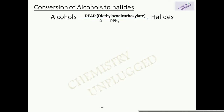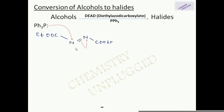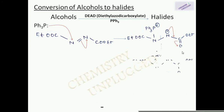Triphenylphosphines are also used for conversion of alcohols to halides. For this reaction we use DEAD — diethyl azodicarboxylate — a very important reagent frequently asked in competitive exams. In the first step, the lone pair on phosphorus of triphenylphosphine attacks the nitrogen atom of DEAD. The nitrogen–nitrogen double bond, being weak, breaks and the negative charge shifts to the second nitrogen atom, establishing an equilibrium. In the next step a nucleophile-containing alkyl group is used — the negative charge shifts and the nitrogen attacks the methyl group.